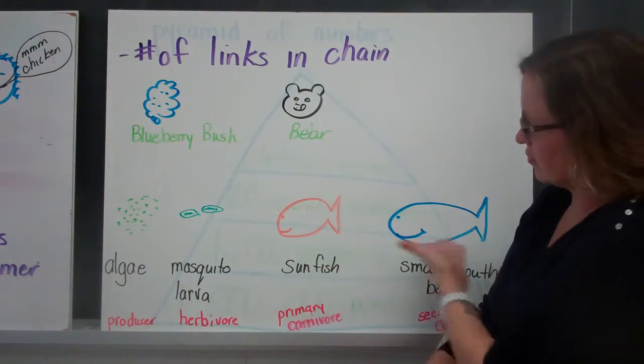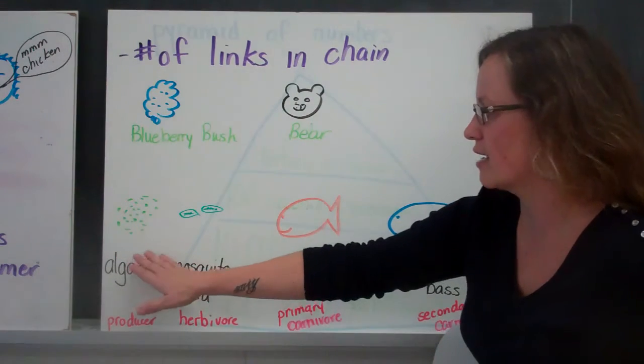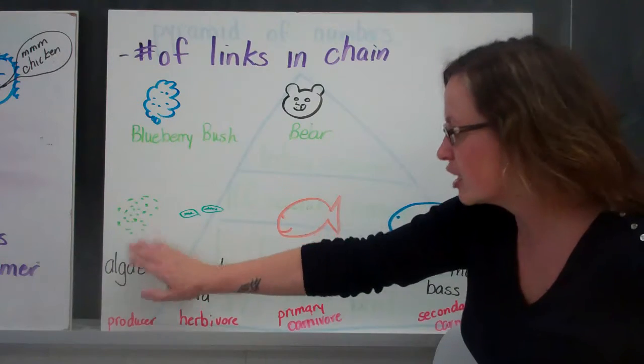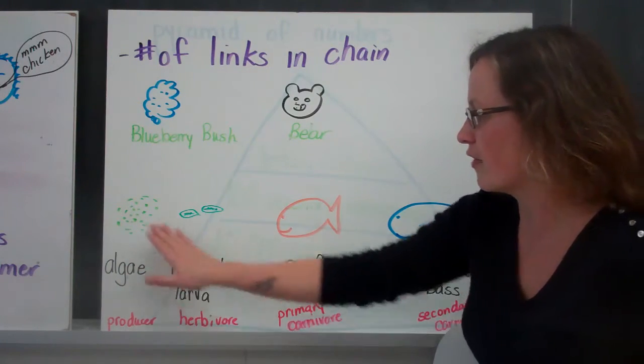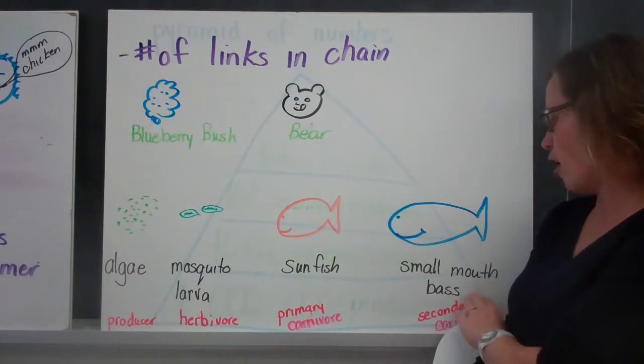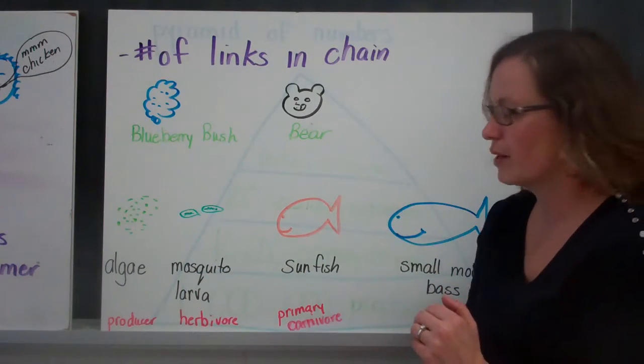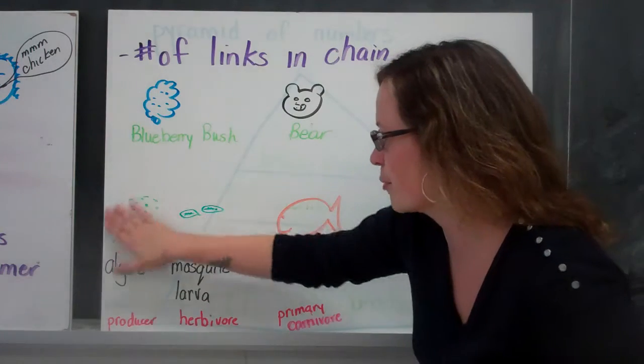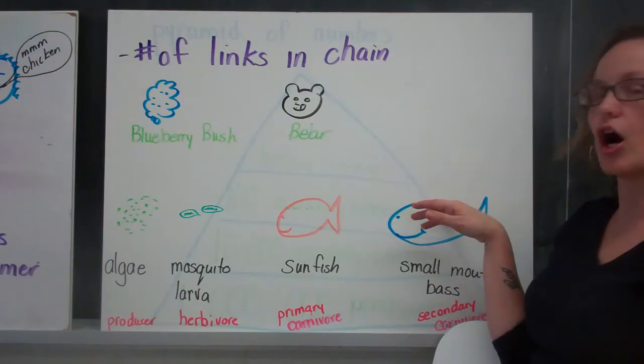And then it could have more than two links. So in this case, this food chain has algae, and then the mosquito larvae eats the algae, and then the Sunfish eats the mosquito larvae, and the smallmouth bass eats the Sunfish. So we start with our producer, and then we move along our consumers.